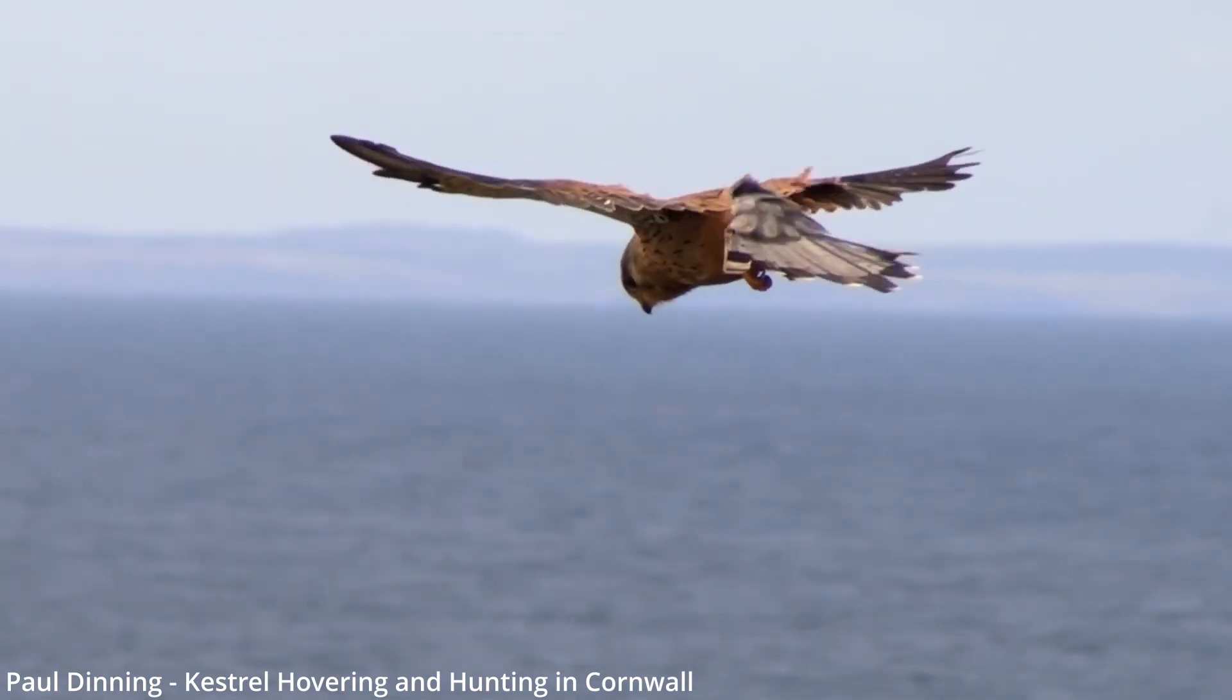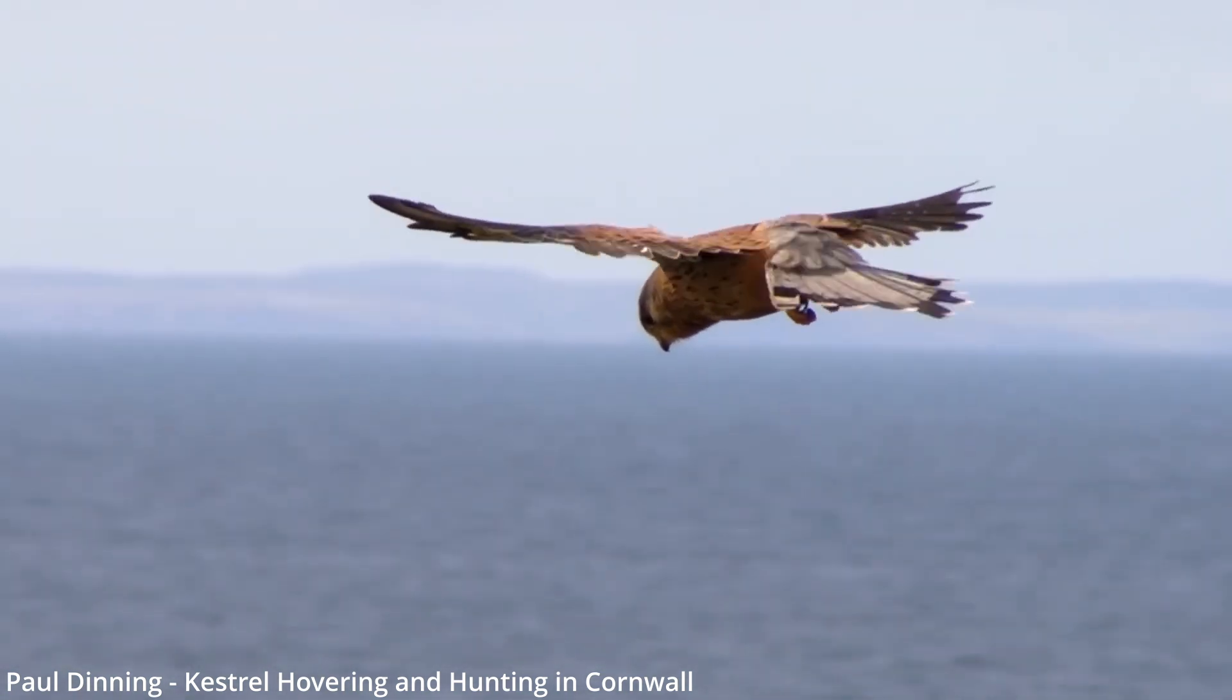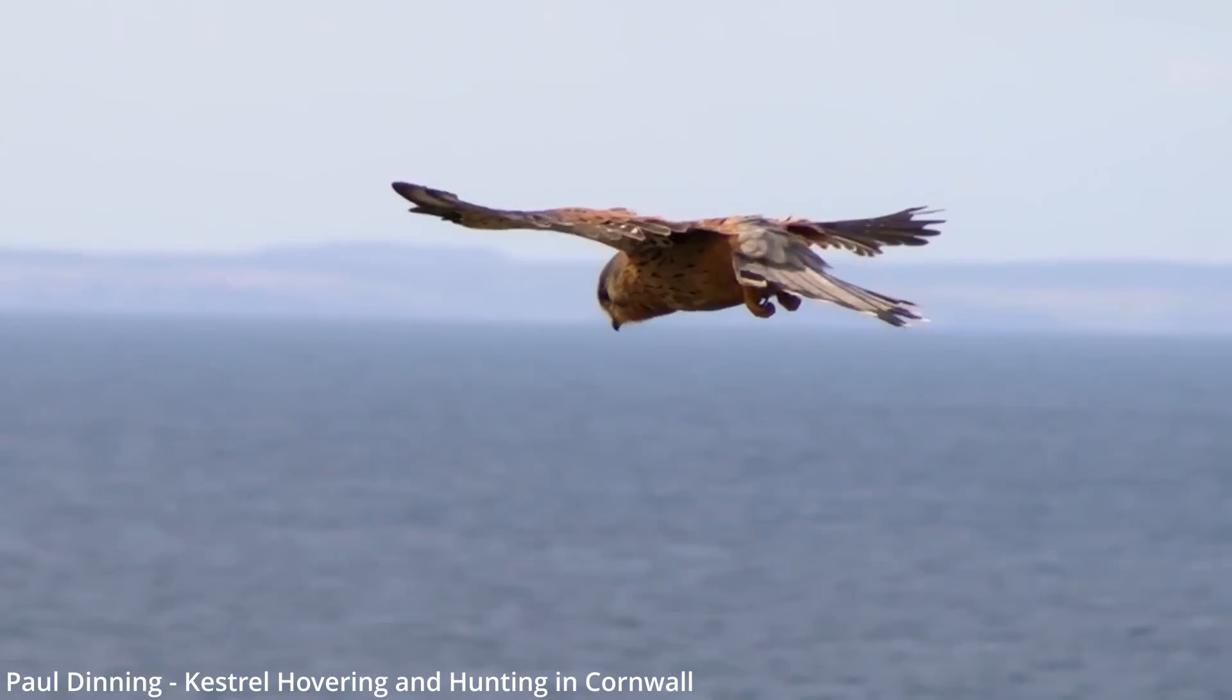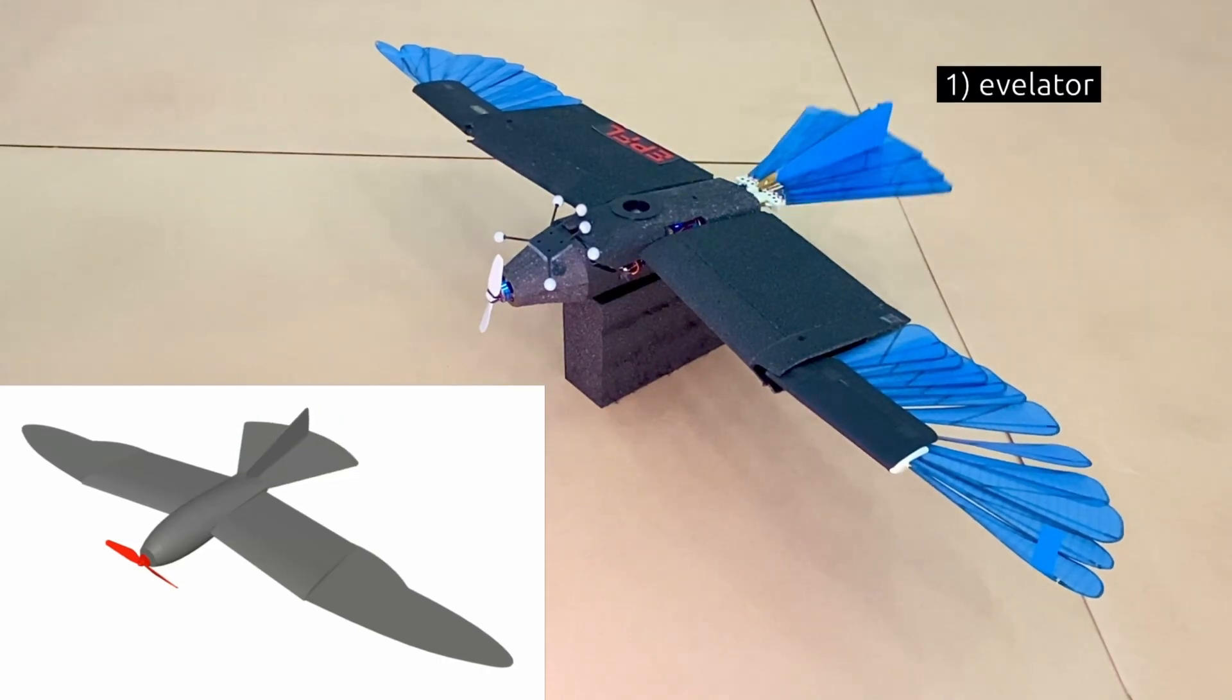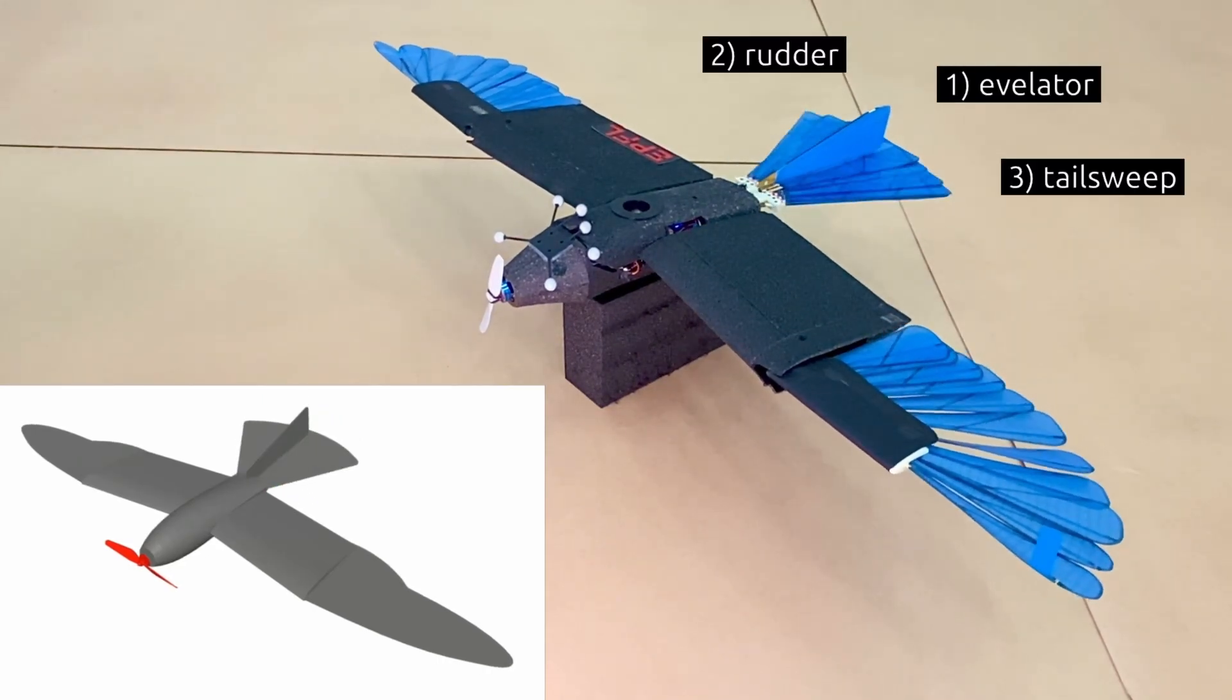Birds adapt the shape of their wings and tail to remain stable in gusty winds. Avian-inspired drones are designed with similar degrees of freedom.